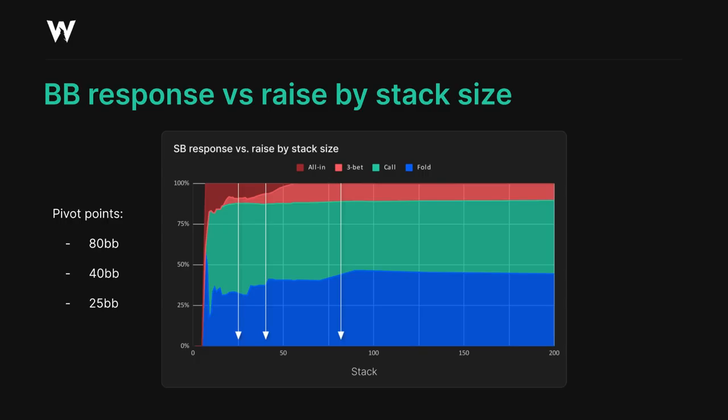There is a significant change in the big blind strategy at the 40 big blind mark, but this is because the small blind's raise size changes from 3.5 big blinds down to 3 big blinds in most of our sims. That results in the big blind getting a much better price, and forces the big blind to defend a fair amount wider. You'll see that this change in sizing is fairly often reflected in how people actually play, which is convenient for us in implementing these strategies.